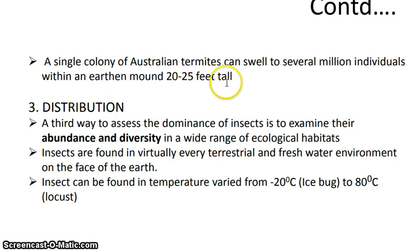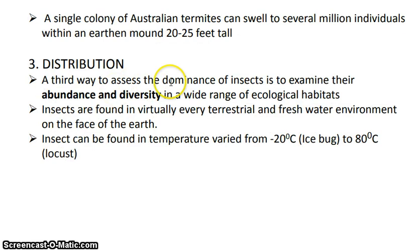A third way to assess the dominance of insects is to examine their abundance and diversity across a wide range of ecological habitats. Insects are found virtually in all environments — terrestrial, freshwater, and in the air — and they can bear temperatures ranging from minus 20 degrees centigrade to 80 degrees centigrade.